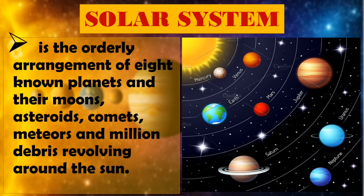The Solar System is the orderly arrangement of eight known planets and their moons, asteroids, comets, meteors and million debris revolving around the Sun.